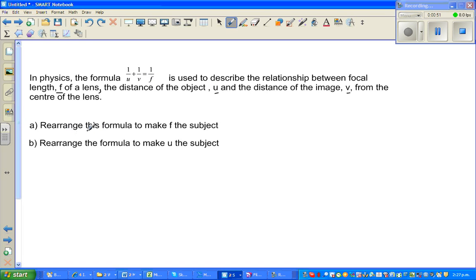Rearrange this formula to make f the subject. So I'll write the equation again: 1/f = 1/u + 1/v. I've got denominators of f, u, and v. How can I eliminate all the denominators? Well, what if we multiply all the fractions with fuv?